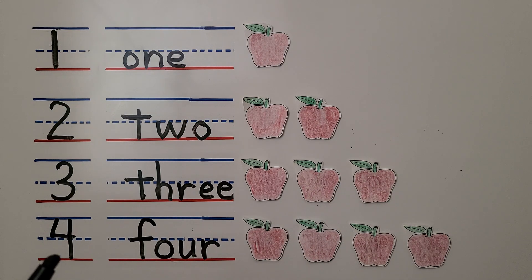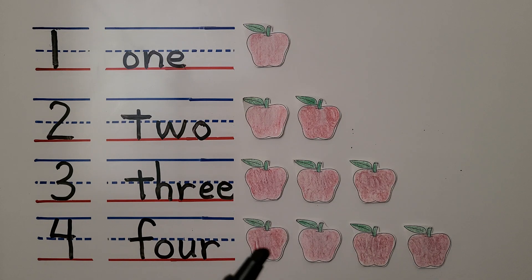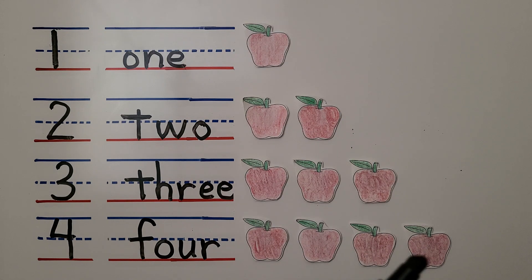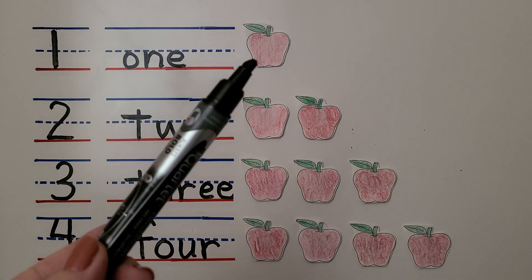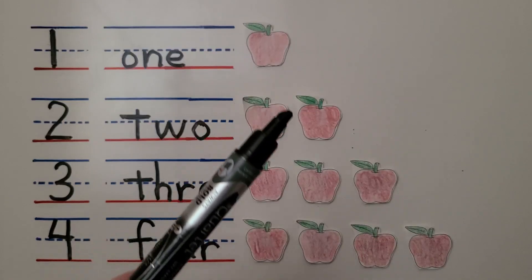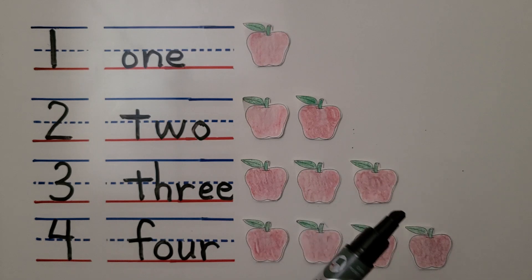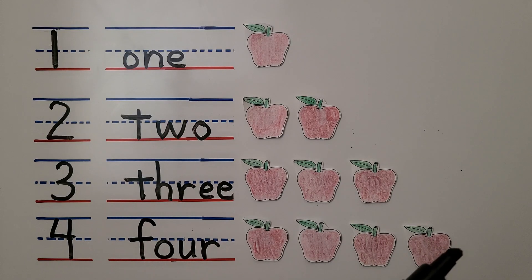And here we have the number four, and here we have the word four. We have one, two, three, four apples. Do you notice as we get more apples, the row of apples gets longer?